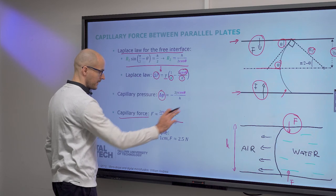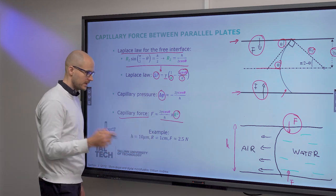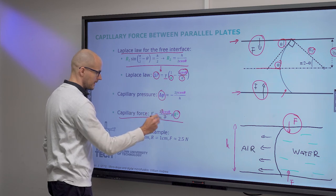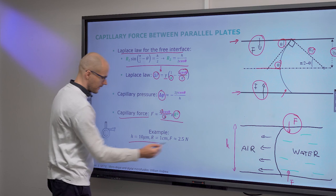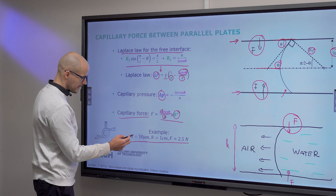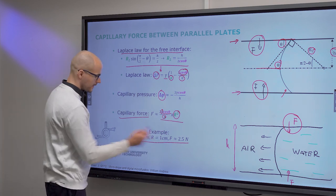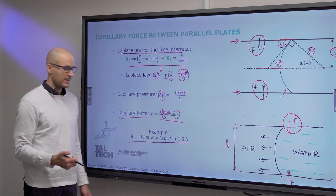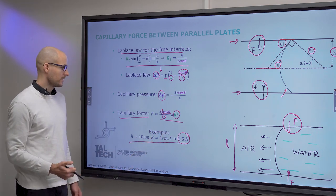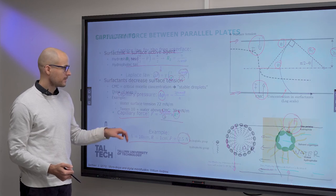And so this force can be expressed from the radius of the meniscus, the contact angle, surface tension, and the height of your channel. Now therefore, in this simple example, we have, if the channel has a height of 10 microns and the radius of your meniscus is one centimeter, then the adhesive force would be 2.5 newtons, or capillary force.